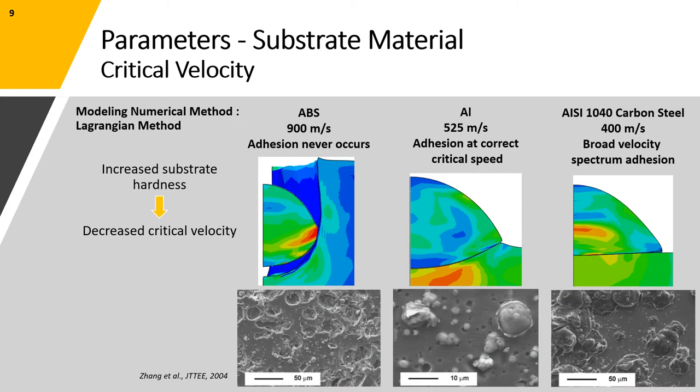Using the same finite element model, this time we consider three different sets of material parameters for the substrate. For ABS polymer, which is the softest of the three, we almost never achieved successful adhesion, even at velocities as high as 900 meters per second. For substrate made of aluminum, we achieved adhesion at a correct critical velocity, which in this case was equal to 525 meters per second.